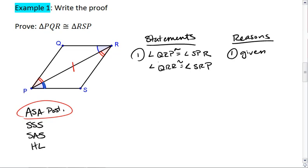So we're given QRP congruent to SPR. And QPR, just want to make sure that we can tell the difference between the P and the R, is congruent to SRP.